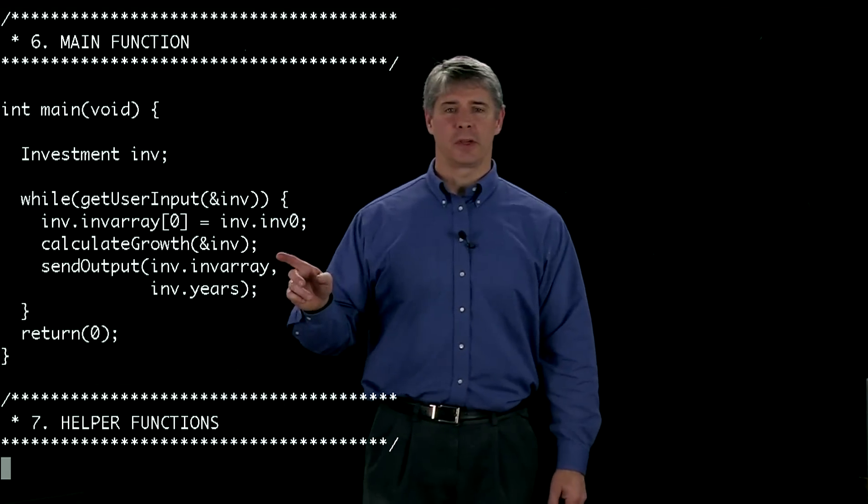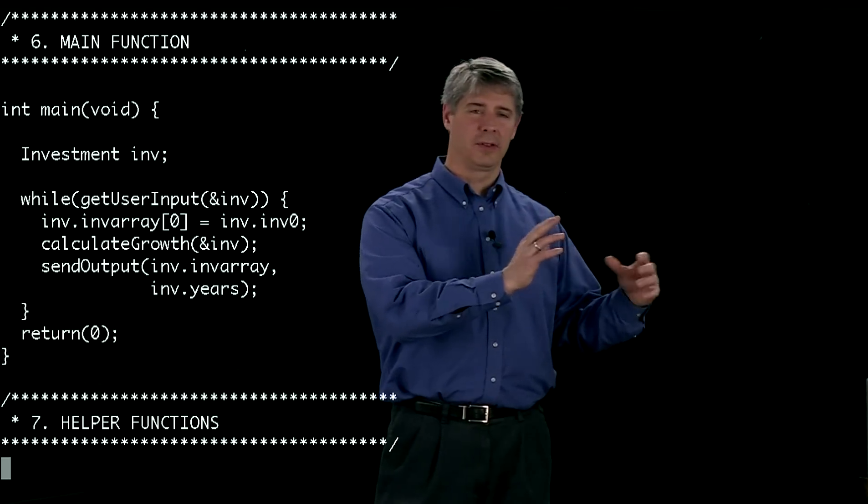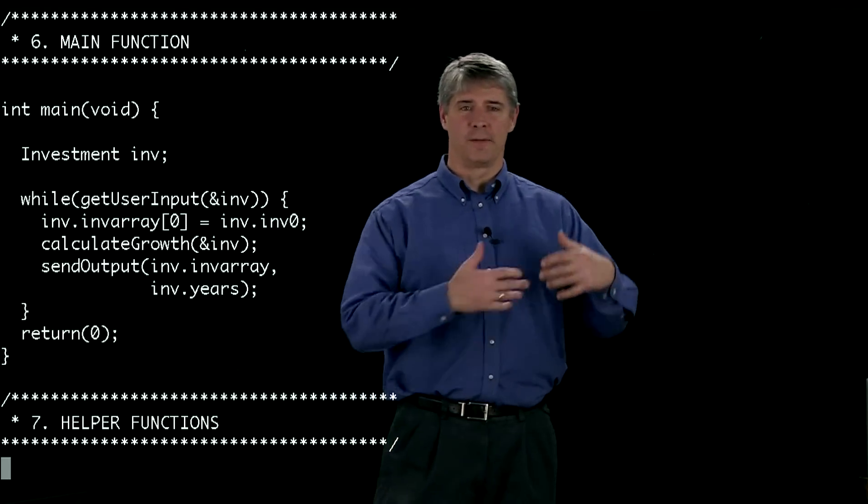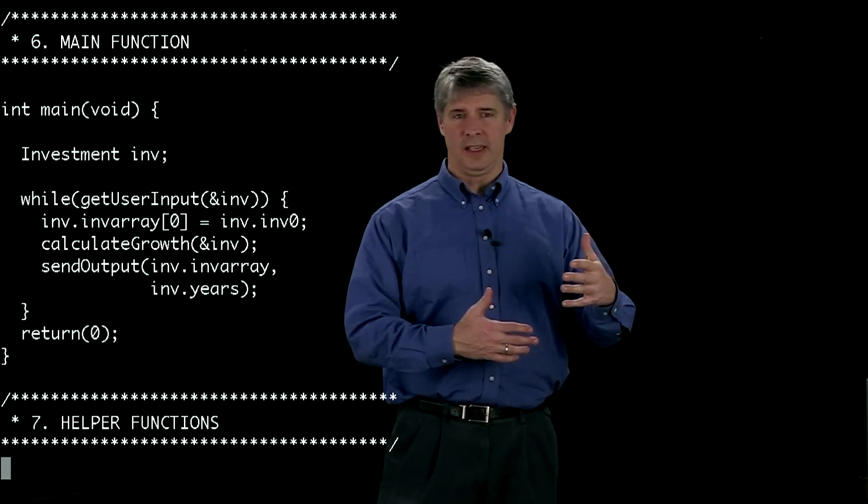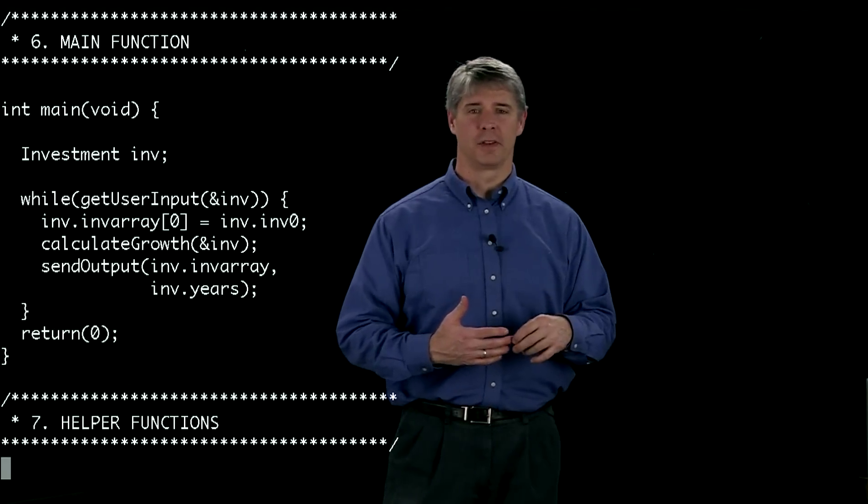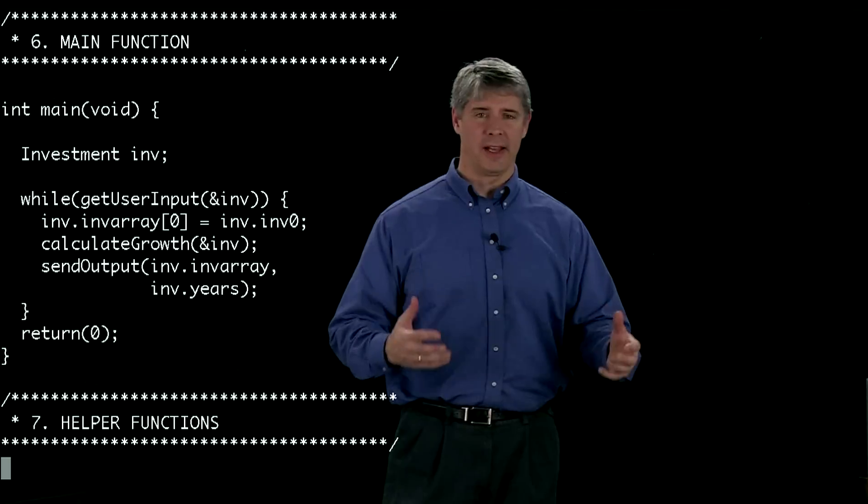The next thing we do is we call calculateGrowth. We send again over the pointer to the type, or to the variable inv. And what that calculateGrowth does is it fills inv with the new values of the growth in the investment over the years. And then the last thing we do is we print out the output.